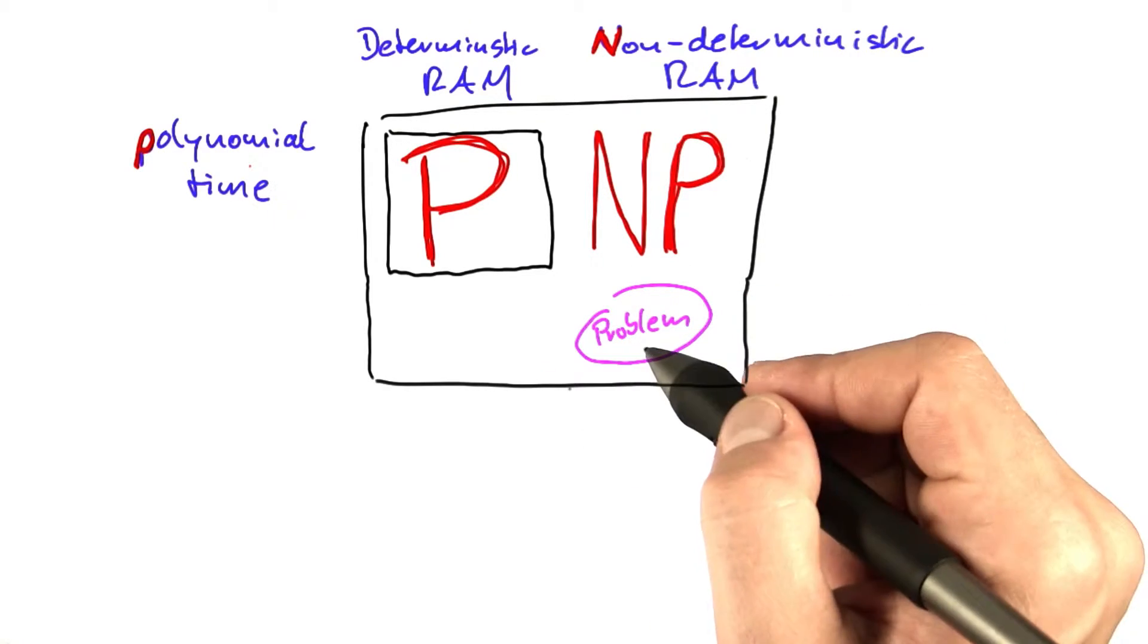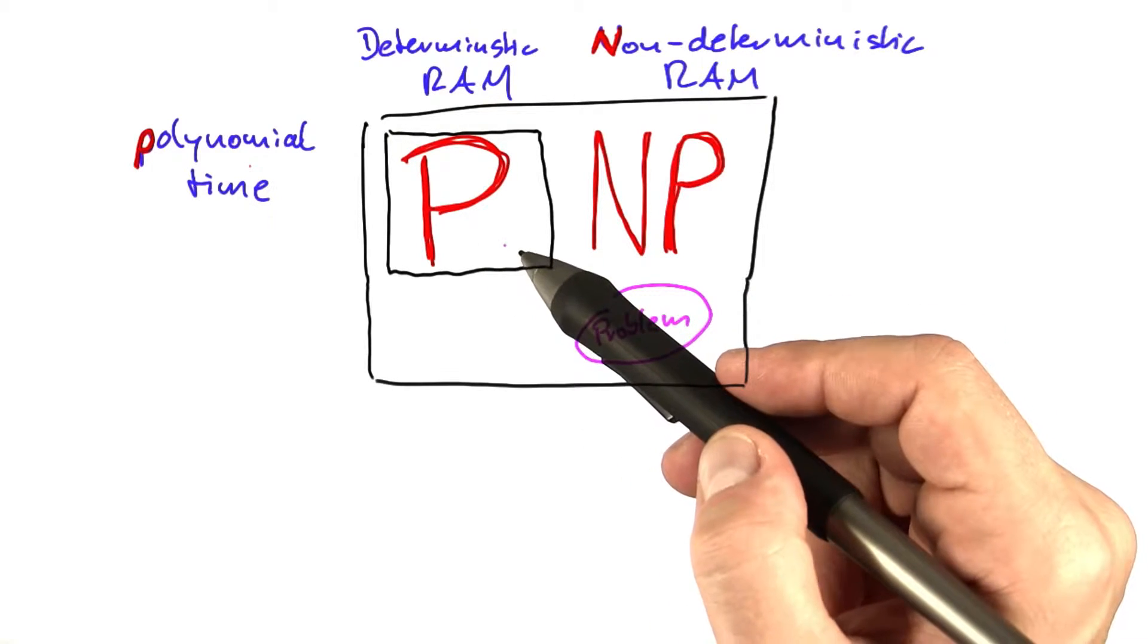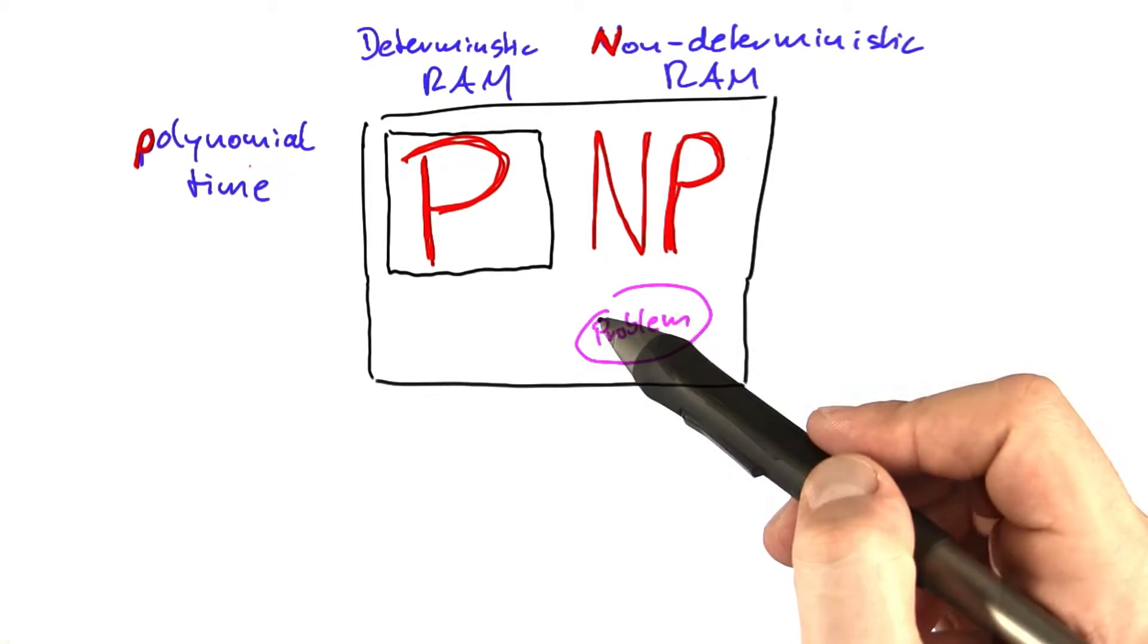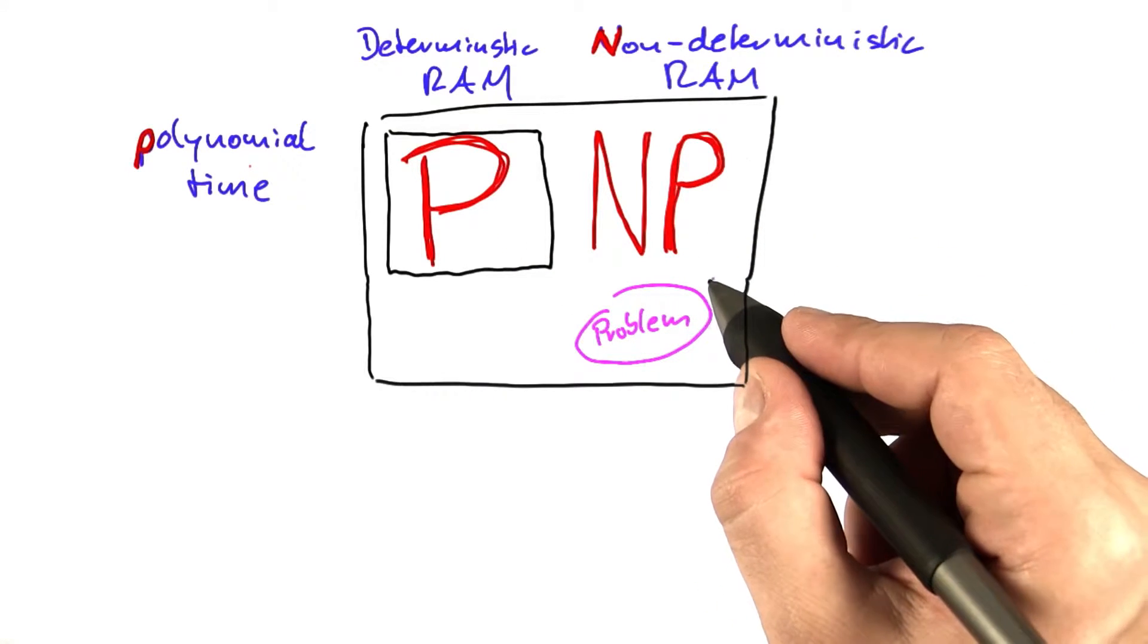So let's say we have a problem that we know to be in NP, but we're not sure if it's contained in P or not. In that case, there's actually only two things that could be true.